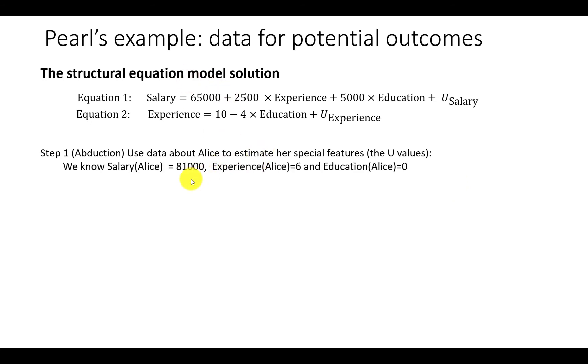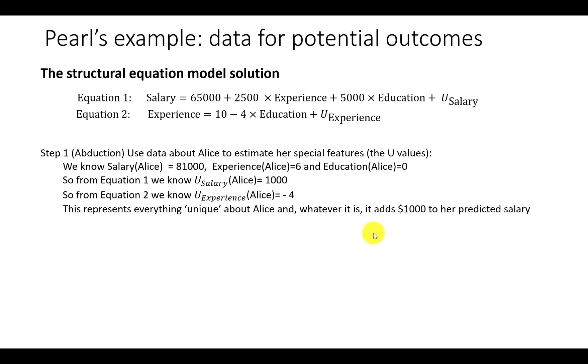We know Alice's salary is $81,000, her experience is six years and her education is zero because she only had a high school education. From equation one, we calculate the exogenous variable for salary to be 1000 when we plug these in. And from equation two, we calculate the exogenous variable for experience to be minus four. This represents everything that's unique about Alice.